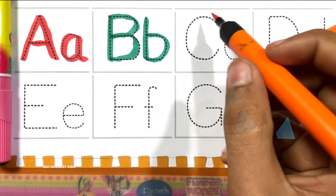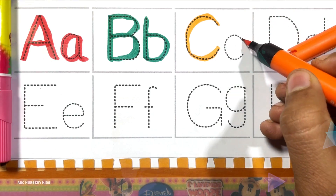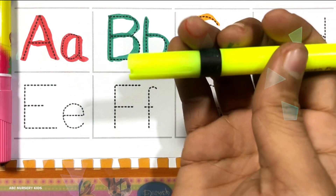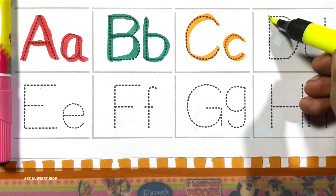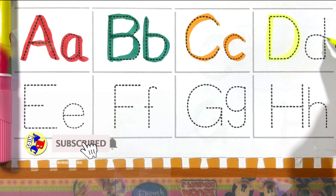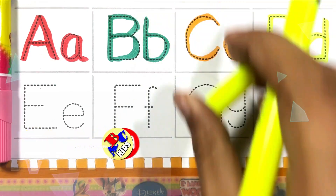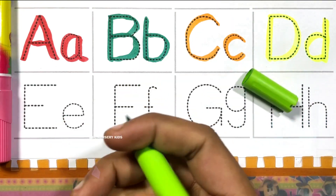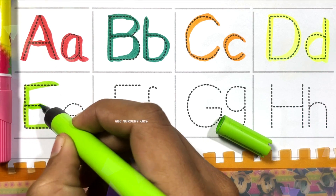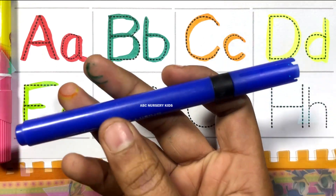C, C for cat. Neon color. D, D for dog. Light green color. E, E for elephant. Dark blue color.